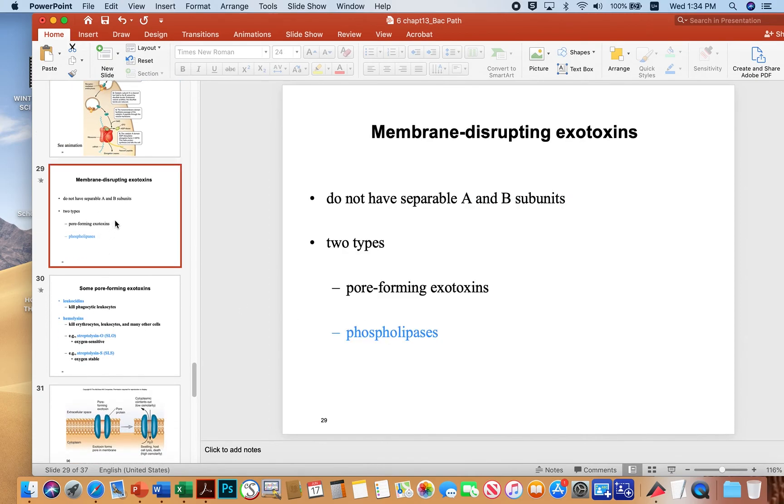The membrane-disrupting exotoxins don't have A and B subunits, but there are two types. There's the pore formers and the phospholipases.